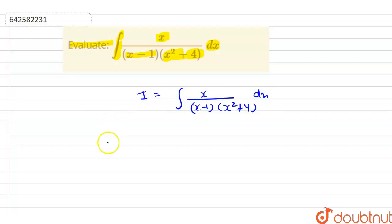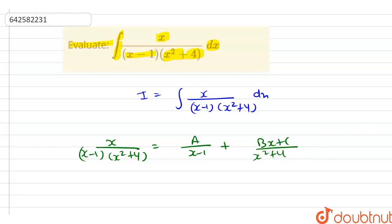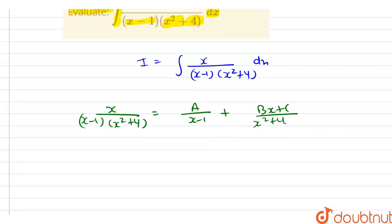We use partial fractions. Let x divided by (x minus 1)(x squared plus 4) equal A by (x minus 1) plus (Bx plus C) divided by (x squared plus 4).